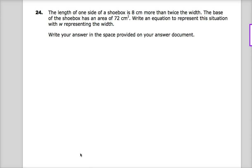The length of one side of a shoebox is 8 centimeters more than twice the width. The base of the shoebox has an area of 72 centimeters squared. Write an equation that represents the situation with W representing the width.